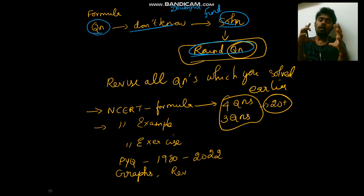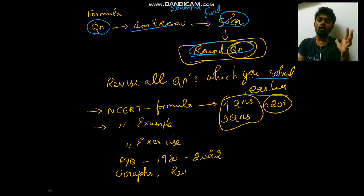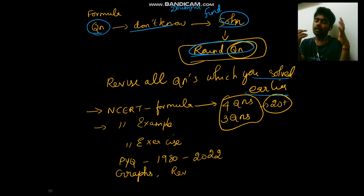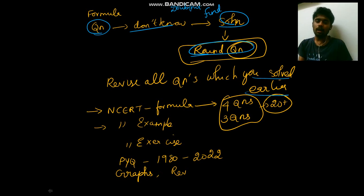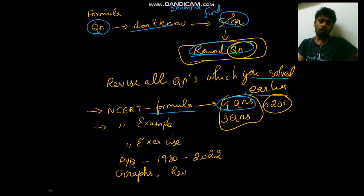You must solve all the questions which you have solved earlier — solving all the questions you solved earlier is of utmost importance. In the book, we have formulas. In 2020, 4 direct formula questions were asked. In 2021, 3 direct formula questions were asked.